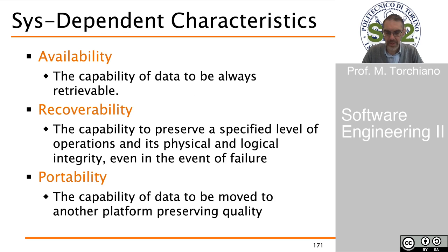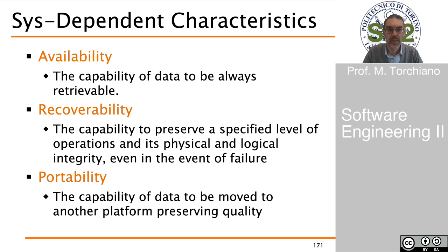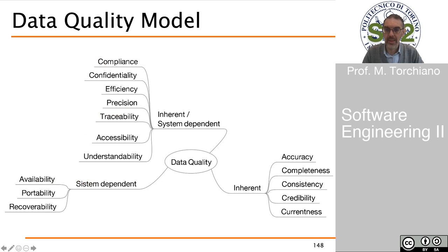The last three characteristics are only system dependent. Availability is the capability of accessing the data whenever they are needed. Recoverability is the capability to preserve the data or maintain a sufficient level of operation even in the presence of failure. Portability is the capability of the data to be moved to other platforms while preserving all the other quality characteristics. These were the last characteristics for data quality, which has two main perspectives: inherent — something that concerns the data themselves — and system dependent — aspects that depend on how the system manages the data.